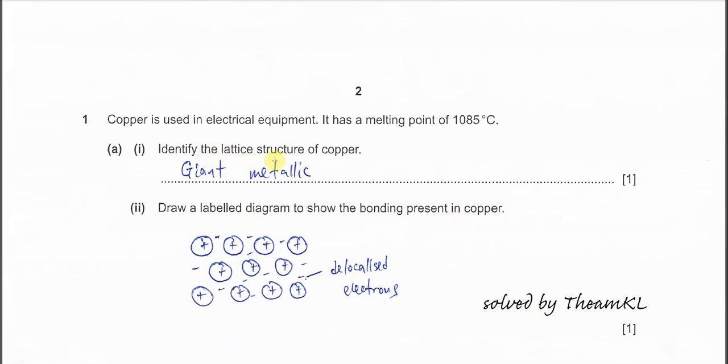Identify the lattice structure of copper. For the lattice structure, we have two main types. One is simple, one is giant. Under simple structure, we just have simple molecular. Giant structure, we have giant metallic, giant ionic, and giant molecular. For copper, it's under giant metallic.